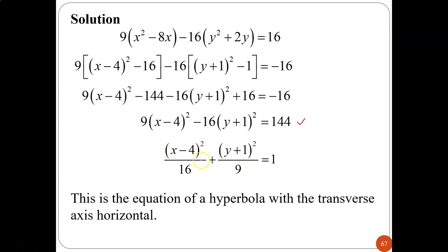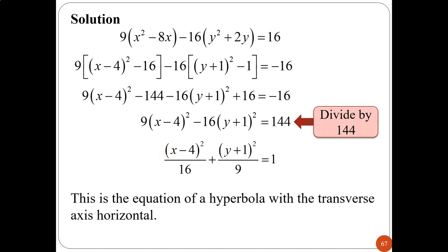Divide the whole equation by 144 — so 9/144 and 16/144 simplify the denominators. The result is the standard form of the hyperbola with the transverse axis horizontal. Since the X-term is at the front, the hyperbola is on the X-axis.